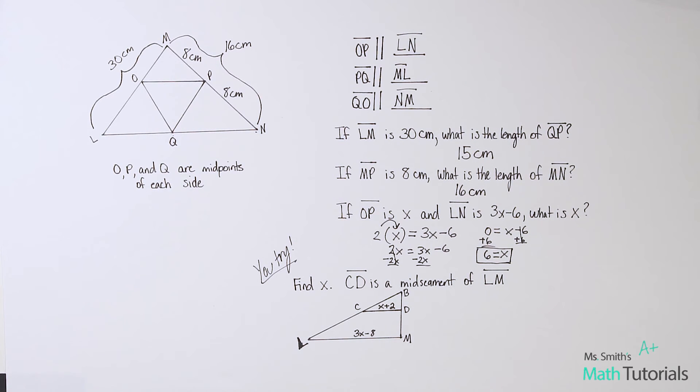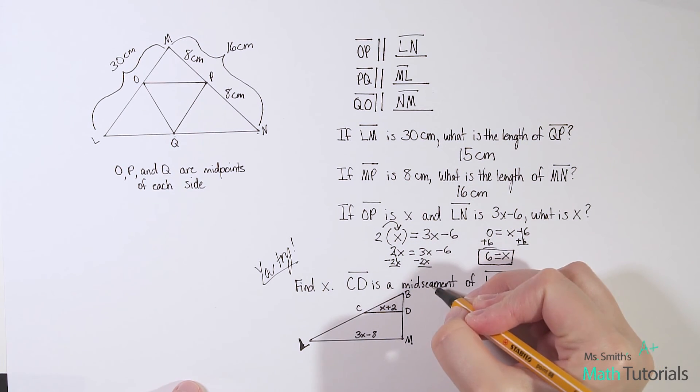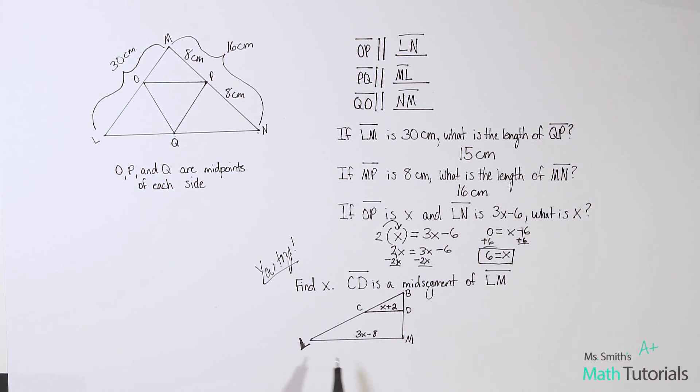Okay, so now I've got an example for you to try. It asks you to find X. It says line CD, line segment CD right here is X plus 2, and it is a mid-segment. It is a mid-segment of LM. So you've got to, just like we did here, you've got to write an equation to be able to solve for X based on your knowledge of mid-segments. I will post the answer in the video description below this video. This has been Ms. Smith's Math Tutorials.